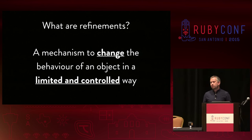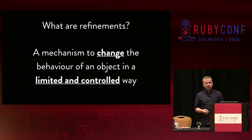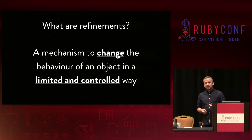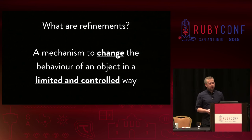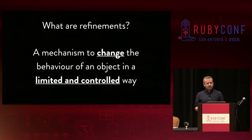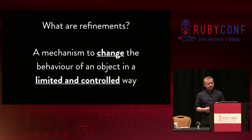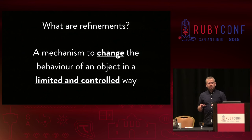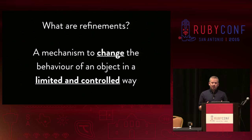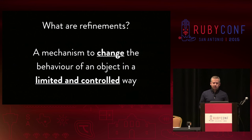Simply put, refinements are a mechanism to change the behaviour of an object in a limited and controlled way. And by change, I mean add new methods or redefine existing methods. And by limited and controlled, I mean that by adding or changing those methods, it does not have an impact on other parts of our software which might interact with the same object.